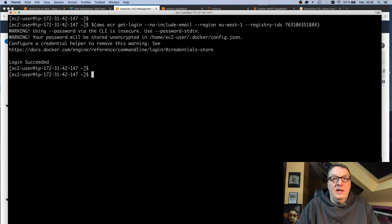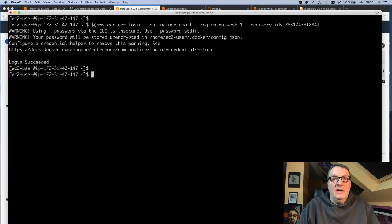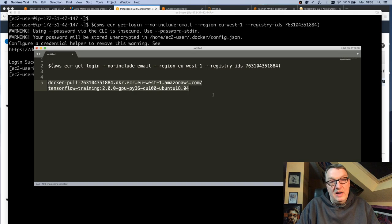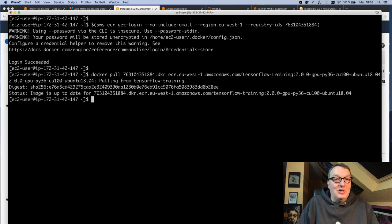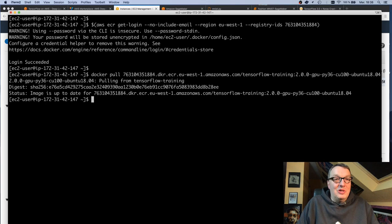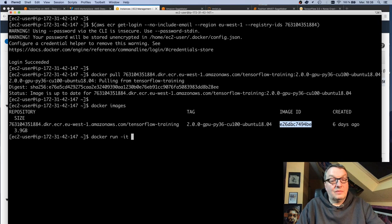And next you can just pull the image. You'll find the list of image names in the Deep Learning Container documentation. I already did that because it's not really interesting to see Docker images being pulled. So now my image is available.